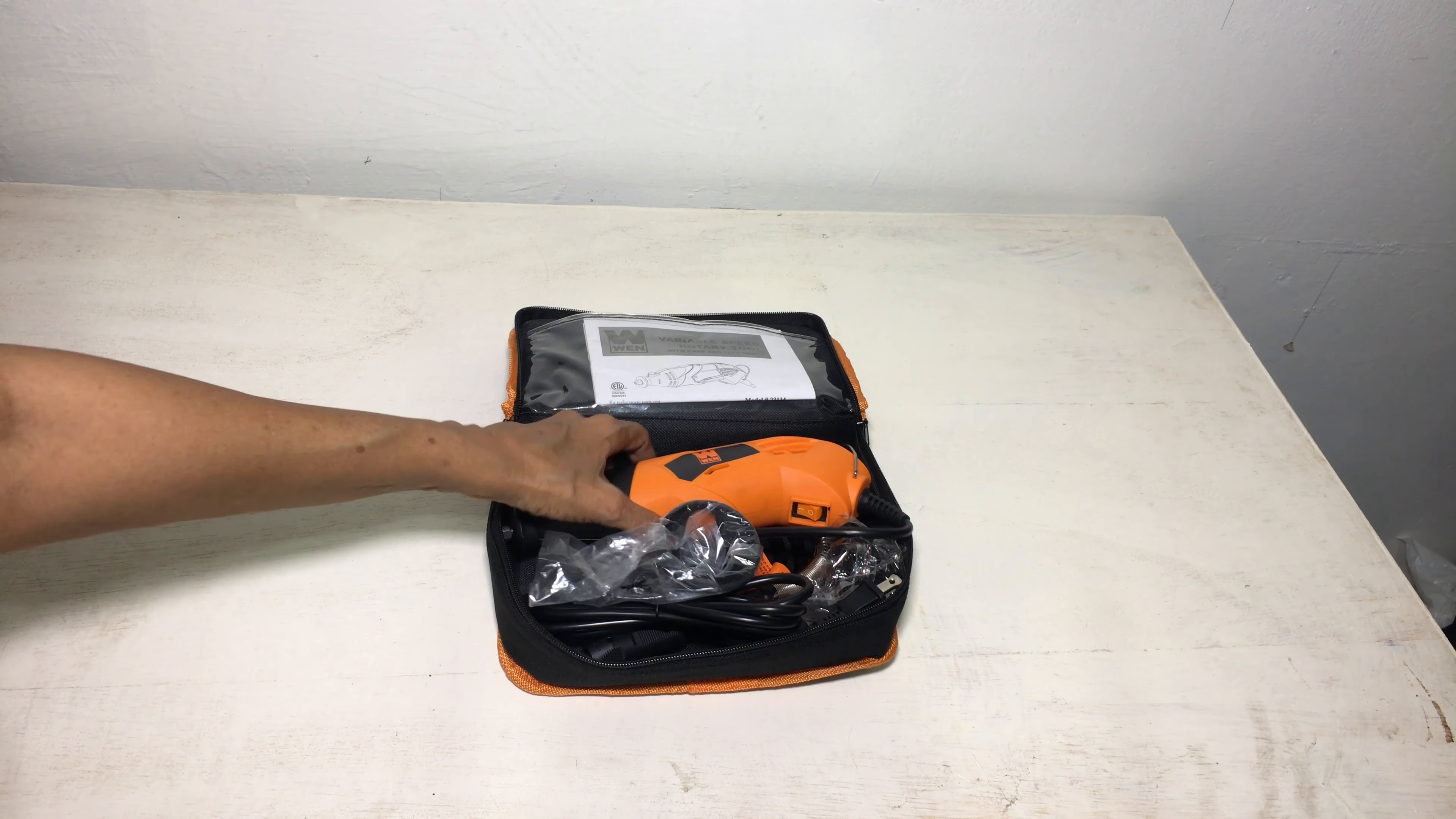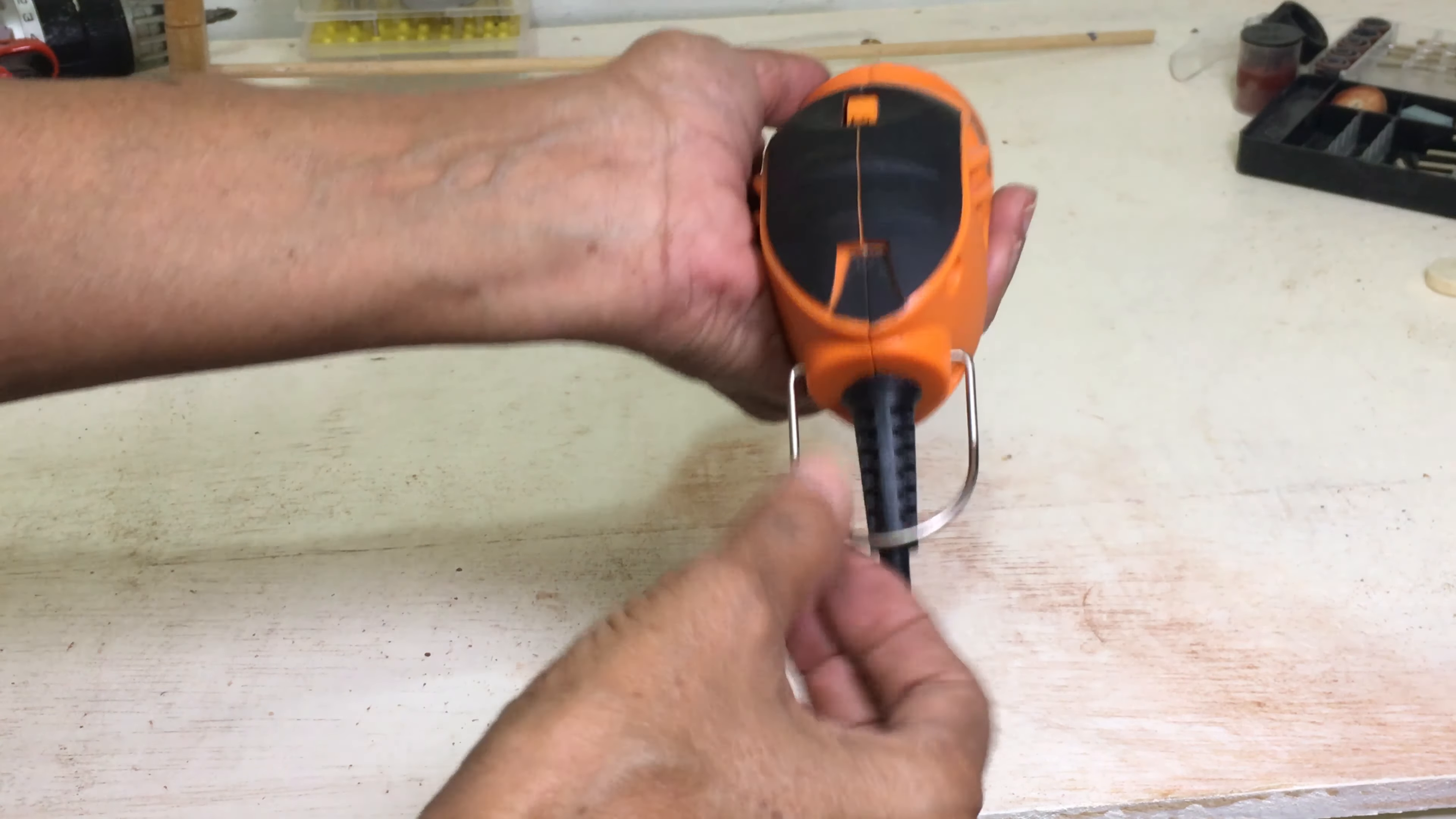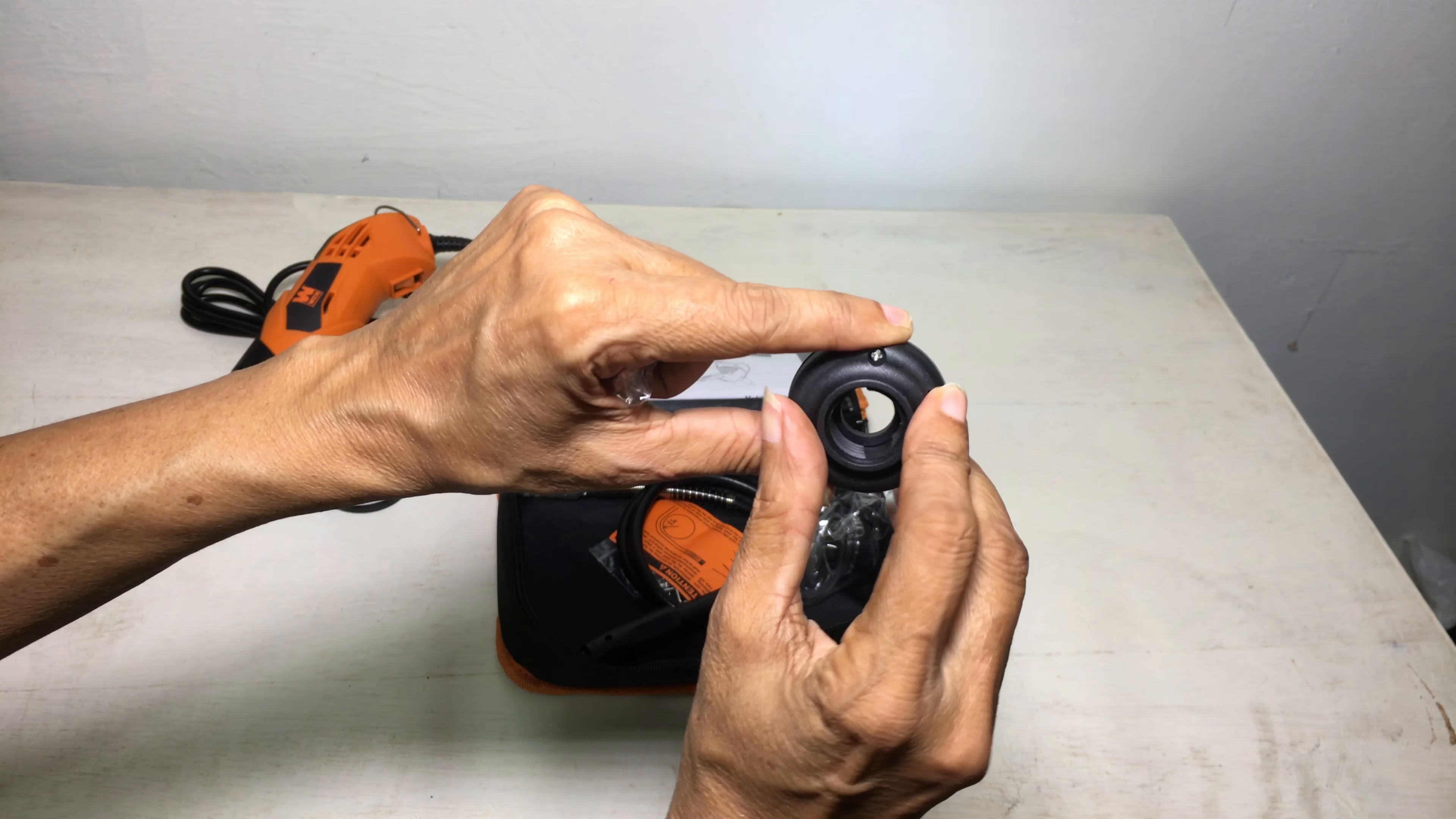The tool comes in a zippered light carrying case. I much prefer this case to the other model. At the top of the tool is the variable speed dial. Below it is the on-off switch and it comes with a hook so that you can hang it. You get the WEN Rotary Tool which has a 1.4 amp variable speed motor. This particular model comes with three collets, a drilling routing guide, a spark and debris deflection shield, and an LED light attachment.